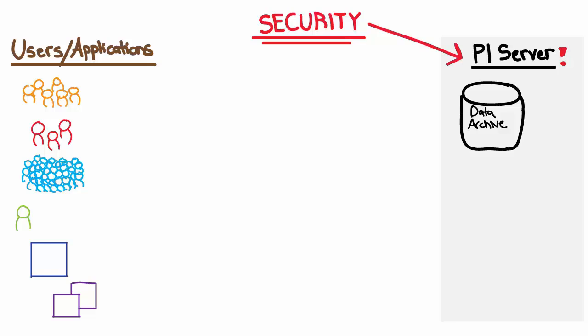Let's focus on the data archive first. The model that I'm outlining is available starting with data archive versions 3.4.380.36 and later.